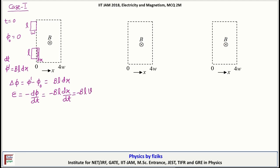Now consider case 2. So assume at t is equal to 0, front end of the loop is at x is equal to W. And it remains at 4W in time dt.